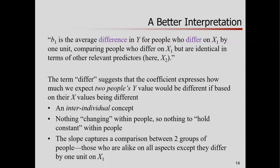The difference, or the term differ, suggests that the coefficient is not about one person changing. It's about two different people or two different groups of people. We're not changing anything within people, so we're not holding constant anything about those people. It's not like, change this aspect of them, but not others. It's really two groups of people. So in this interpretation, the slope captures a comparison, not a comparison of someone and a hypothetical version of themself that's one point different, but two groups of people that are alike in every way, except they differ by one point on this predictor value.